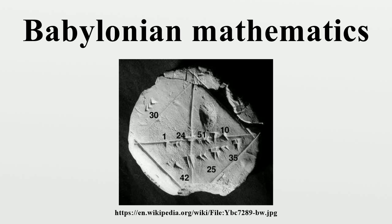The Babylonian system of mathematics was a sexagesimal numeral system. From this we derive the modern-day usage of 60 seconds in a minute, 60 minutes in an hour, and 360 degrees in a circle. The Babylonians were able to make great advances in mathematics for two reasons. Firstly, the number 60 is a superior highly composite number, having factors of 1, 2, 3, 4, 5, 6, 10, 12, 15, 20, 30, and 60, facilitating calculations with fractions. Additionally, unlike the Egyptians and Romans, the Babylonians had a true place value system, where digits written in the left column represented larger values.